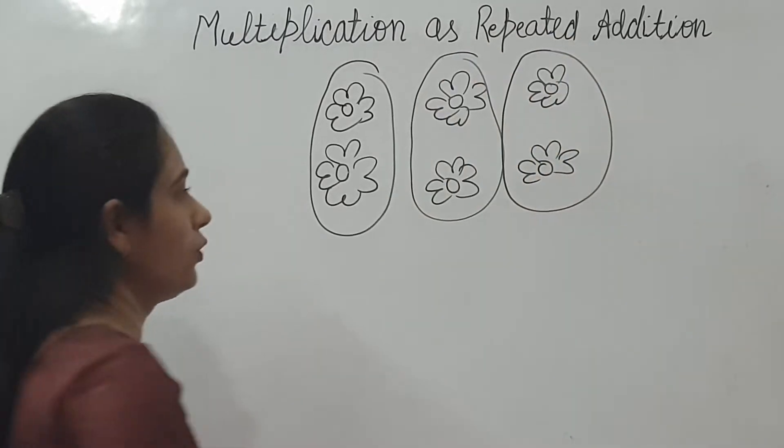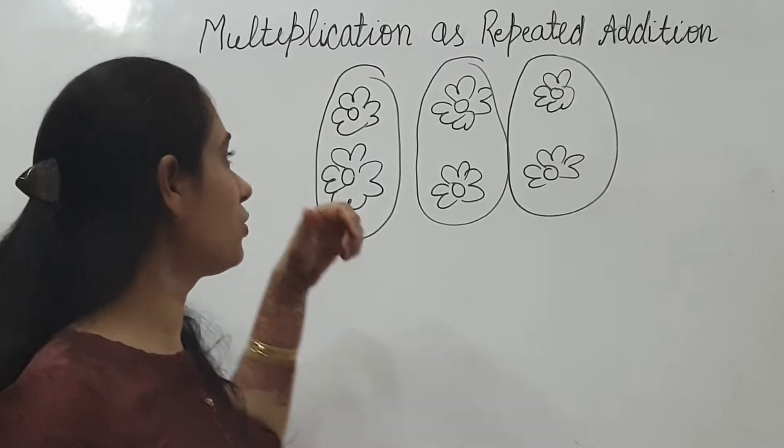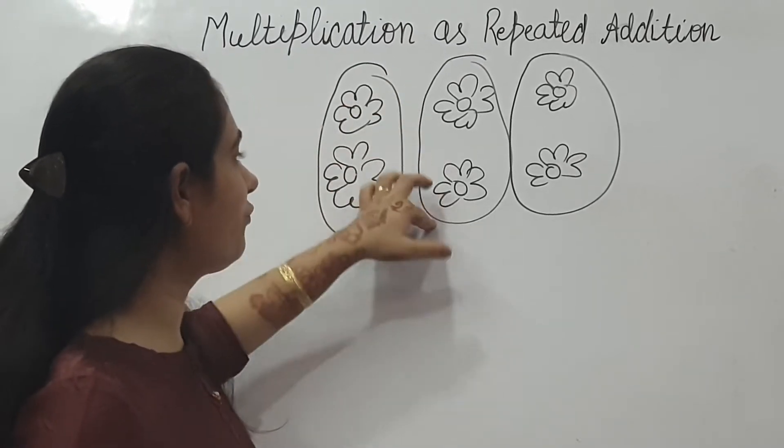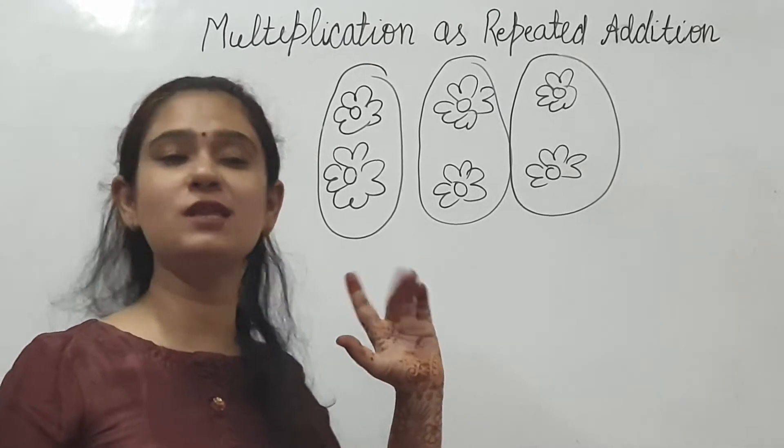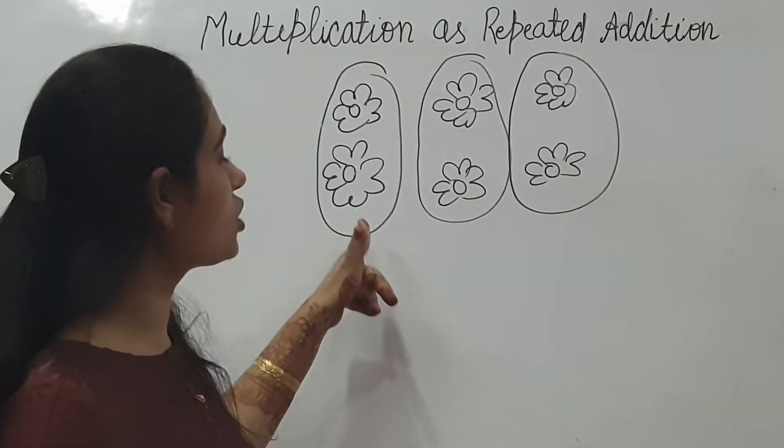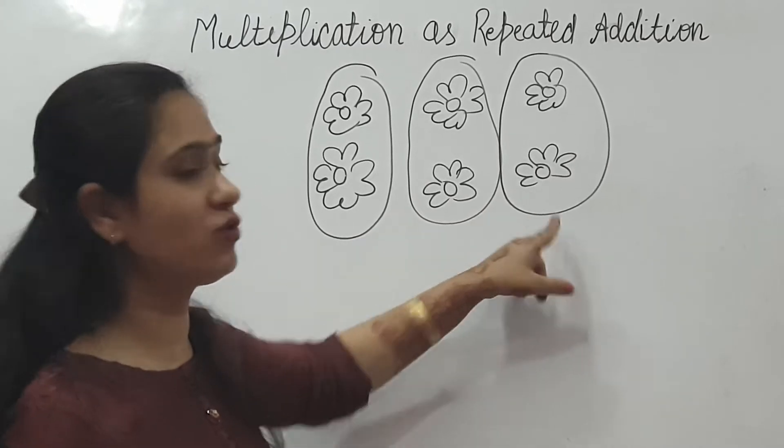Now look at here and tell me how many flowers are there. Can you count? 1, 2, 3, 4, 5, 6. No. We will not do like this. We will watch how many groups are there. Look, one group, two groups, three groups.